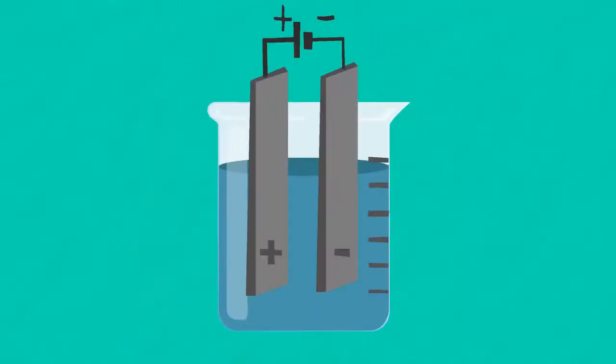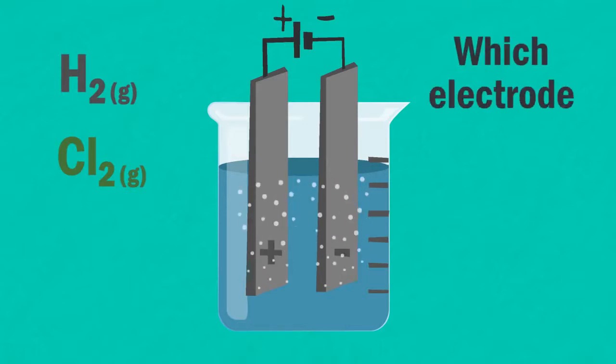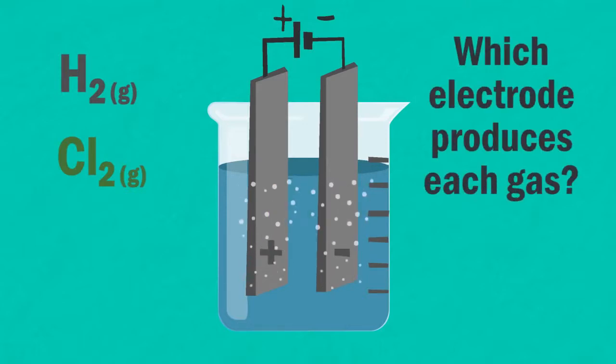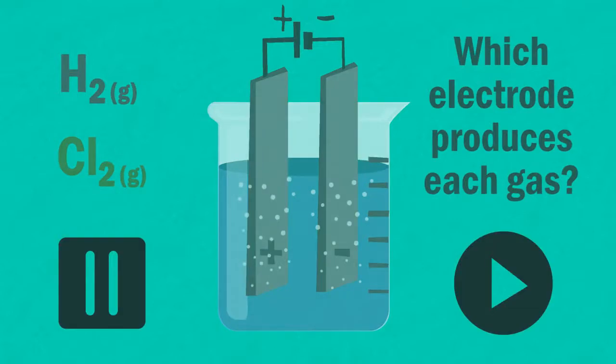When the current flows you will begin to see tiny bubbles of gas forming at each electrode. Both hydrogen and chlorine gas are formed, but can you work out which electrode produces which gas? Pause the video and see if you can work it out.